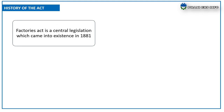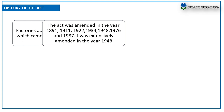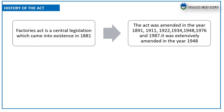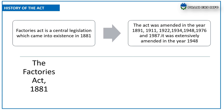The Factories Act is central legislation which came into existence in 1881. The act was amended in the years 1891, 1911, 1922, 1934, 1948, 1976 and 1987. It was extensively amended in the year 1948.